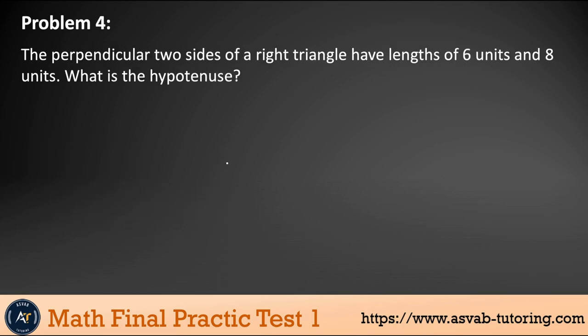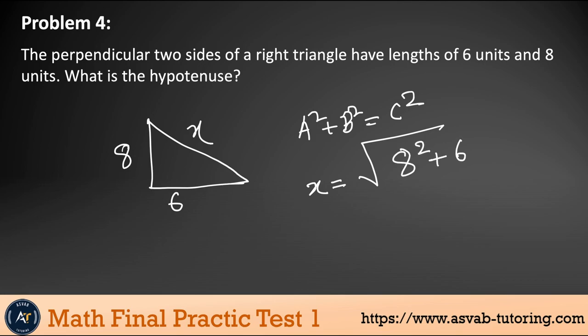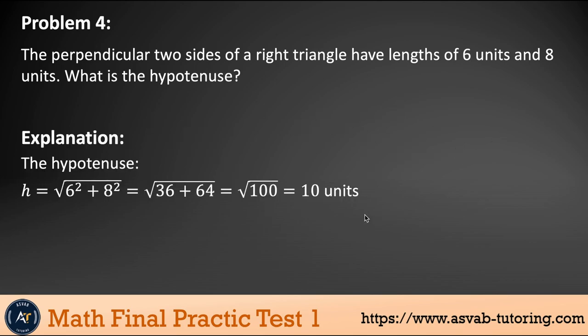Next problem: The perpendicular two sides of a right triangle have the length six and eight units. Let me just draw that. You have to find the hypotenuse. This is the Pythagorean theorem. The Pythagorean theorem says a squared plus b squared equals c squared. So x equals square root of 8 squared plus 6 squared. 8 squared plus 6 squared gives you square root of 100, and if you simplify that, that gives you 10 units.